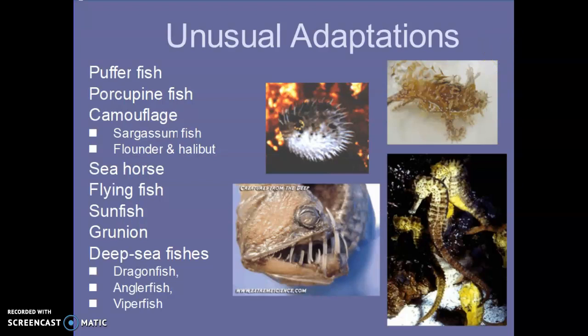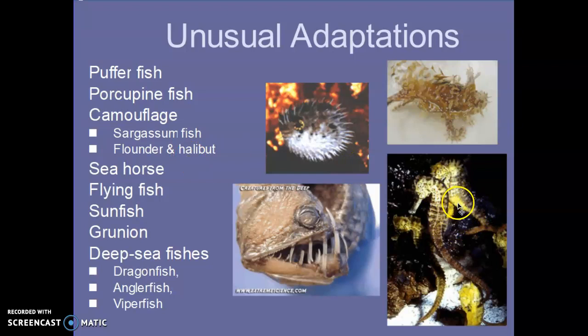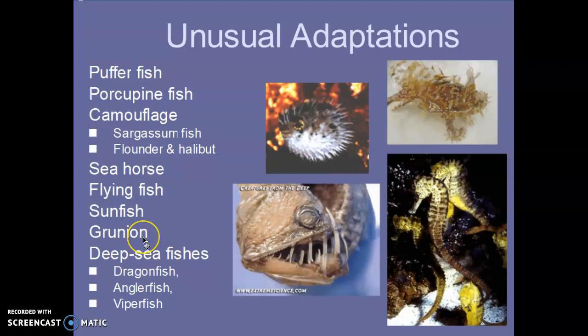Some unusual adaptations in fish — a lot of these are found in the ocean. Puffer fish have the ability to puff up to protect themselves, similar to a porcupine fish. Some have unusual camouflage adaptations — a sargassum fish looks a lot like the seaweed it lives in. Flounder and halibut are flat, so they can lay on the bottom and camouflage. Seahorses are terrible swimmers but have a tail that helps them grab onto things. A flying fish doesn't really fly — it just glides, like a flying squirrel. Sunfish is very big and round, making it hard for predators to get. Grunions go onshore and release their egg and sperm during high tides. And then some deep sea fishes have adaptations for low light — dragonfish, anglerfish, and viperfish.